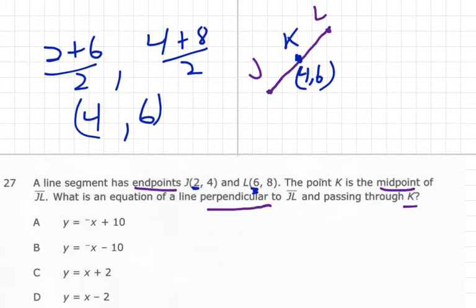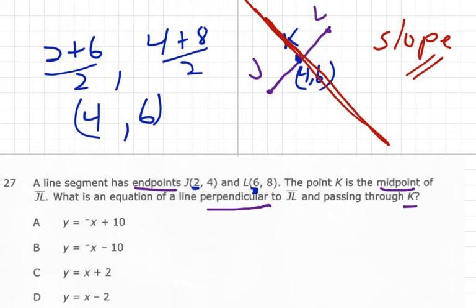So far looking really good. But we need an equation that's perpendicular to JL and passes through K. So perpendicular means it makes a 90 degree angle with JL. So that means the slope is what?